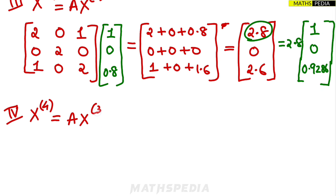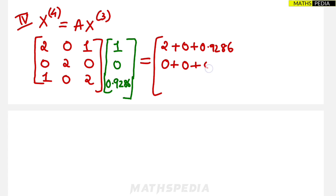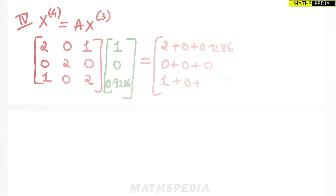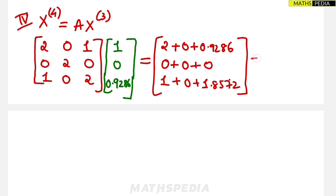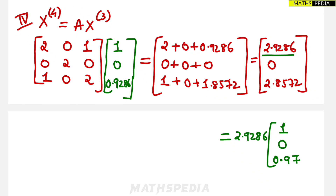Taking the largest value 2.8 outside from [2.8, 0, 2.6], λ^3 = 2.8 and the remaining vector is [1, 0, 0.9286]. The eigenvalue is increasing: 2, 2.5, 2.8. The last vector element is also increasing: 0.5, 0.8, 0.9286.